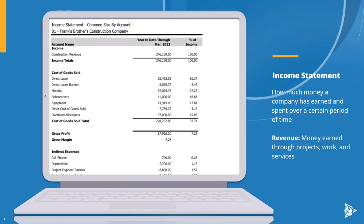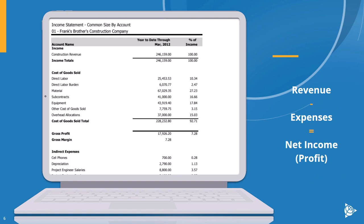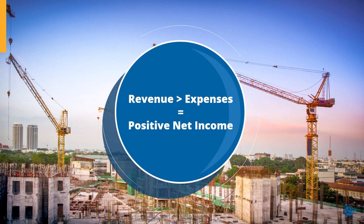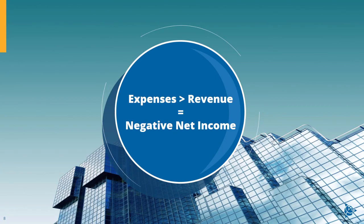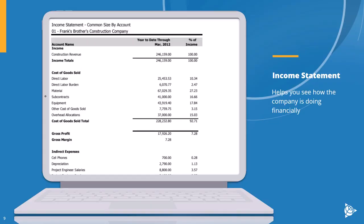On it, you list all the revenue, which is the money earned through projects, work, and services, or even material sales or other income sources. You subtract all the expenses from the revenue. Expenses are the costs incurred to run the business, like wages, rent, utilities, supplies, and taxes. Subtracting these expenses from the revenue gives you the company's net income or profit. If the revenue is higher than the expenses, there is a positive net income and the business has made a profit. But if the expenses are higher than the revenue, there is a negative net income, meaning the company has had a loss in the period.